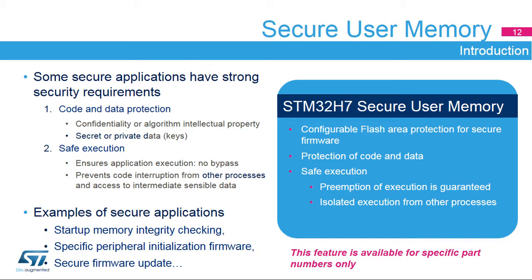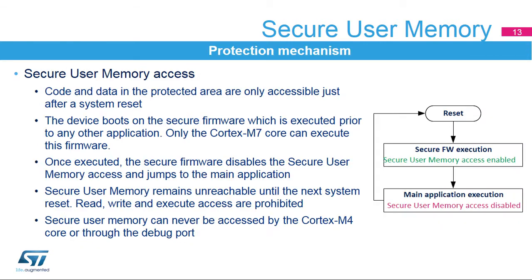The secure user memory is a configurable part of the flash memory. It is accessible only once after reset and allows execution of sensitive firmware before any other process. Once closed, the area remains inaccessible by any means. Secure user memory access is granted after a system reset. The secure firmware is embedded in this area and, if the boot address is correctly set, it will be executed before the main user application. The protected area remains open during firmware execution. Once completed, the firmware closes the area and jumps to the main application. The protected area is closed until the next system reset and the secure firmware and its data are inaccessible.